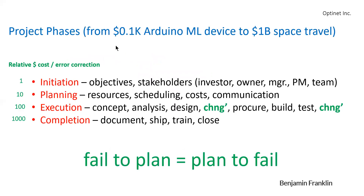Project phases — starting from a simple Arduino machine learning device that will cost $100, all the way to a one-billion-dollar space travel project — they all have four phases. The first is initiation, where the project starts, including defining the objective and what's going to be done.